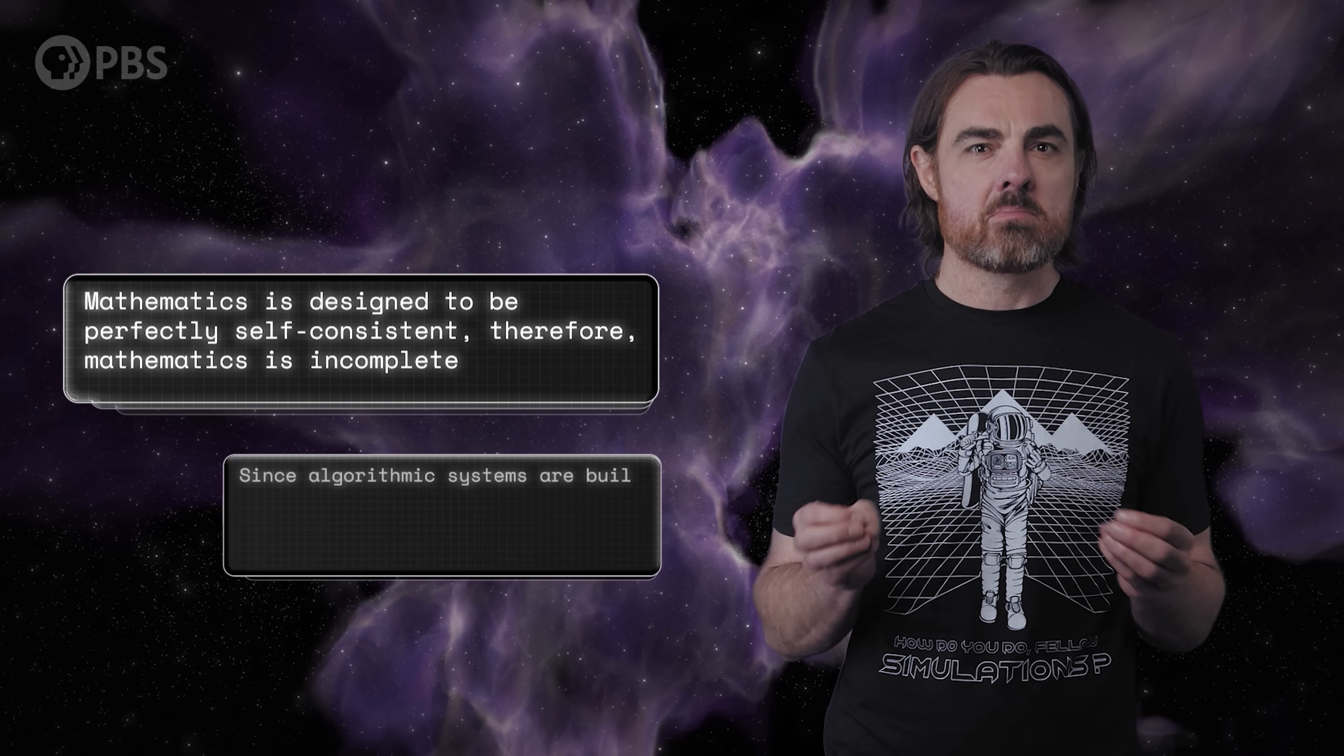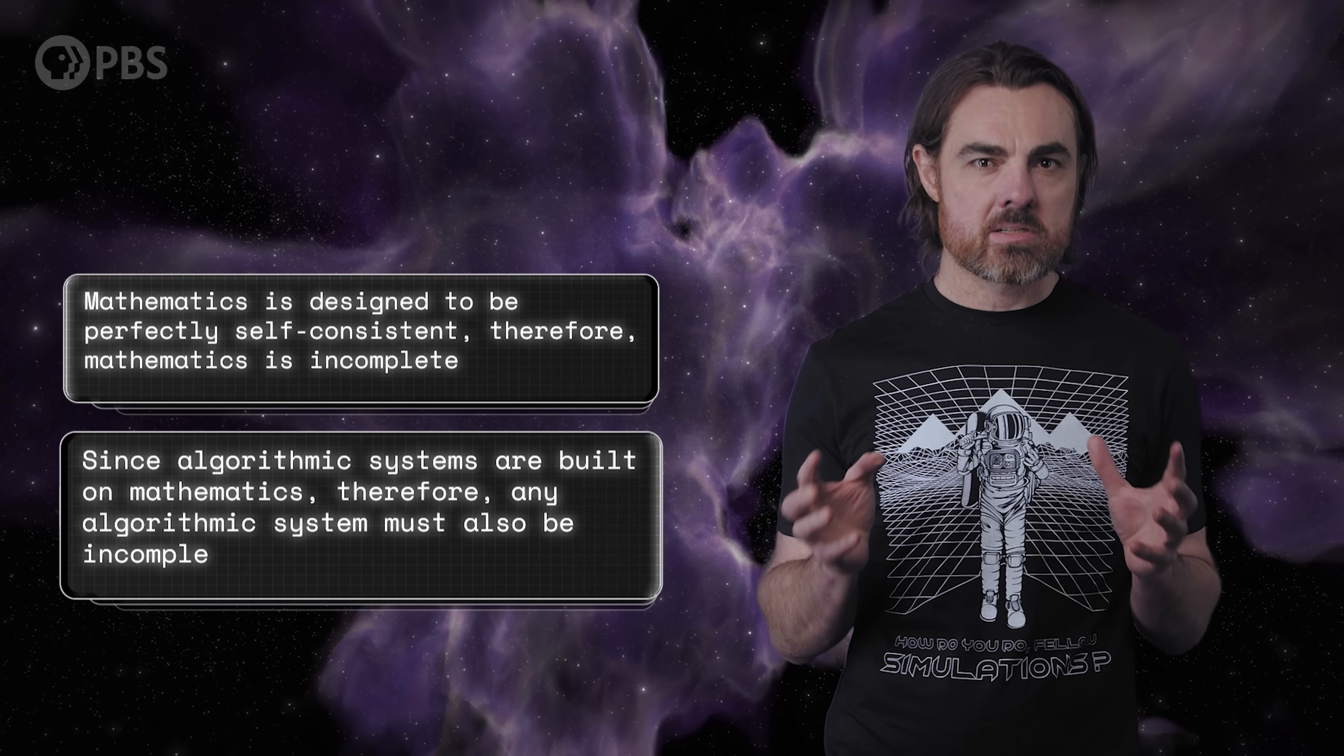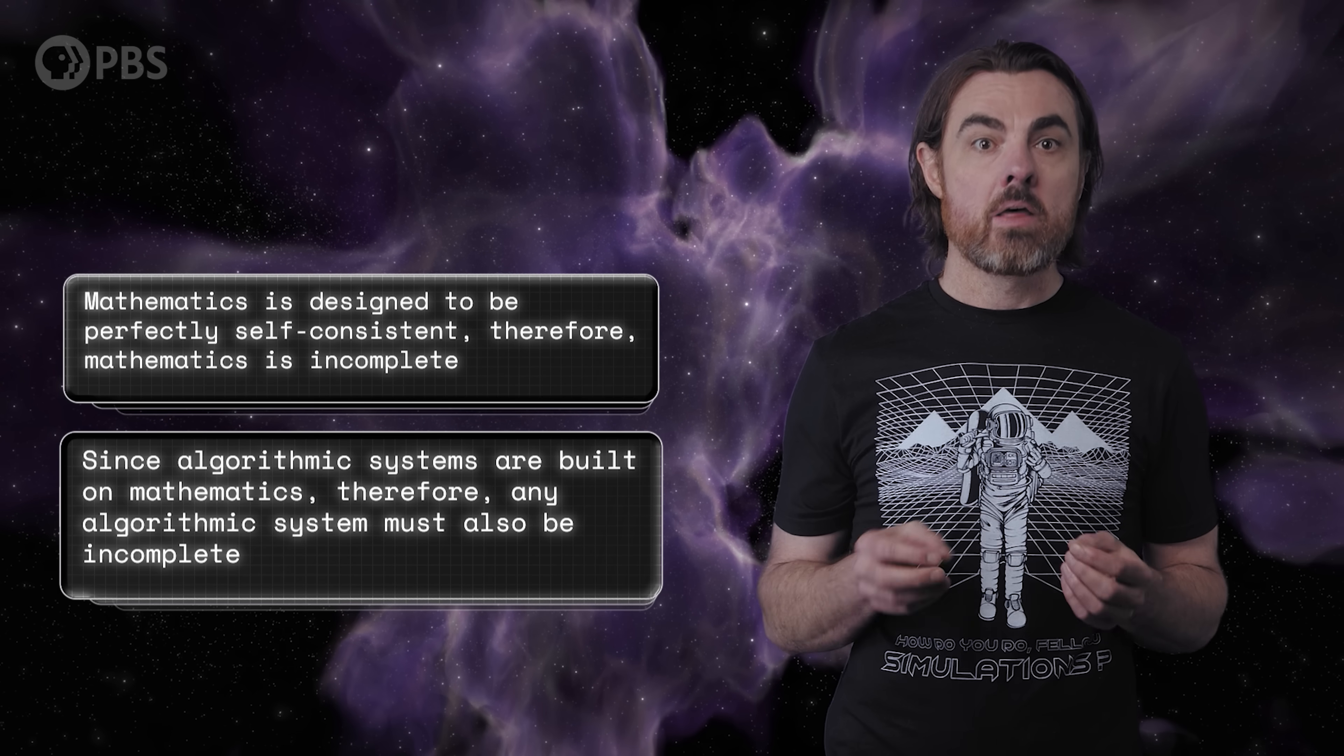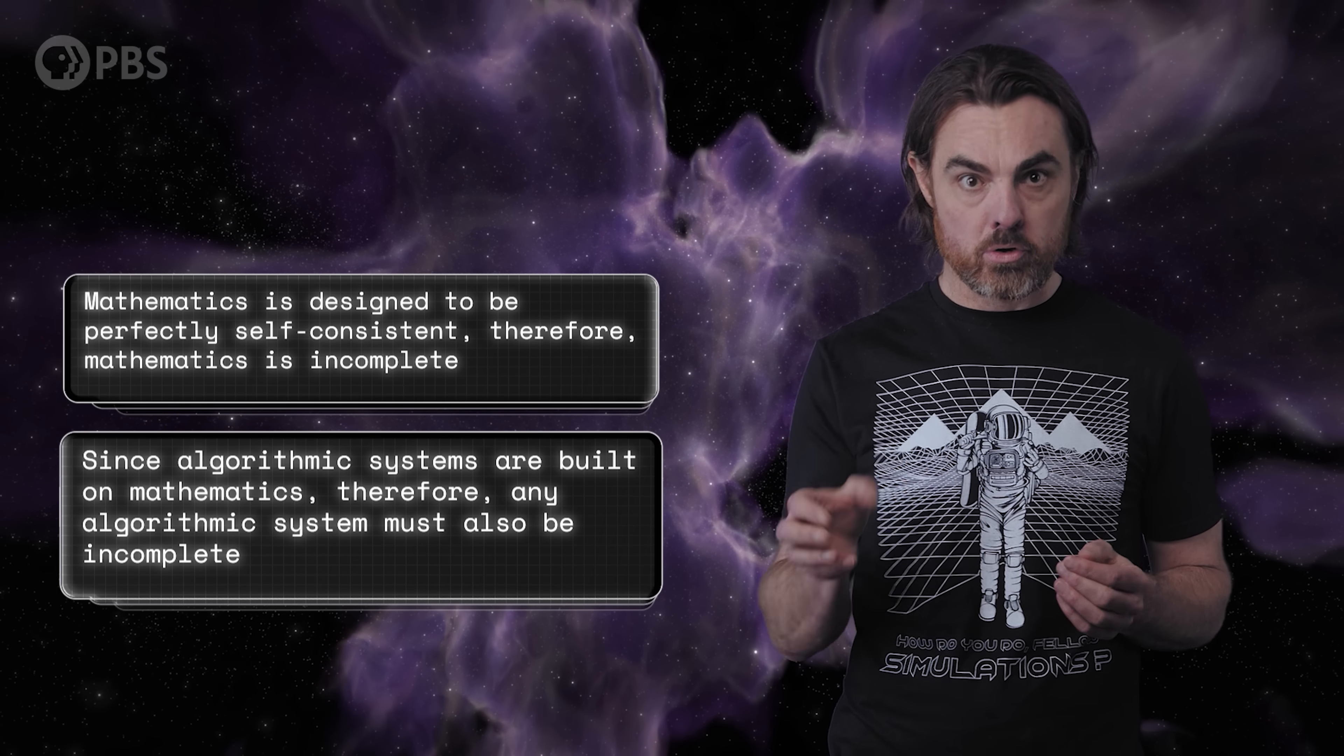It's incomplete. Now, natural languages are certainly inconsistent, but mathematics is designed to be perfectly self-consistent. Therefore, mathematics is incomplete. And since any algorithmic system is generally built on mathematics, like classical computation, they too must be incomplete, according to Kurt Gödel.